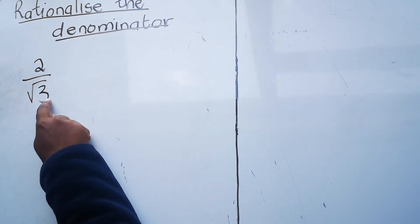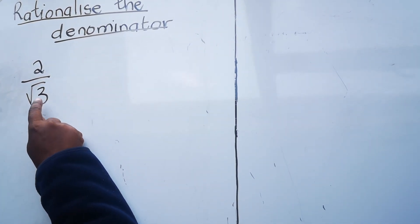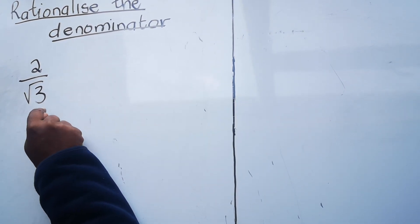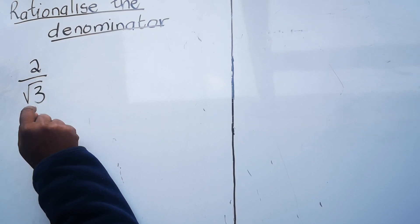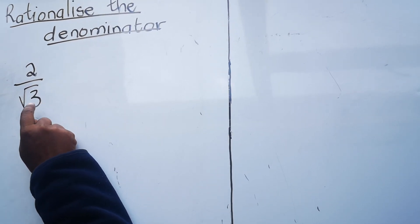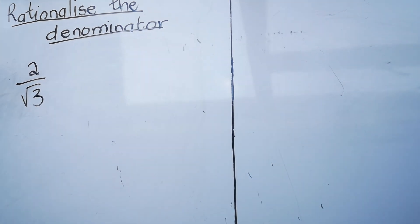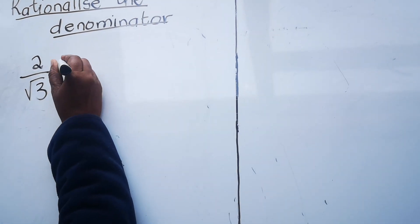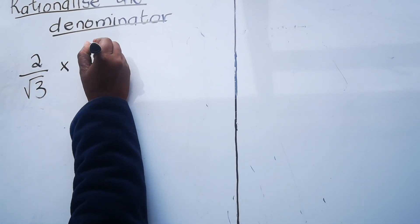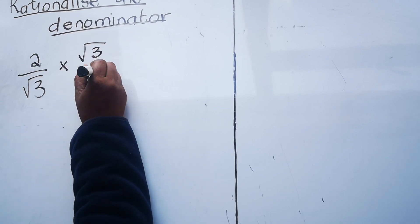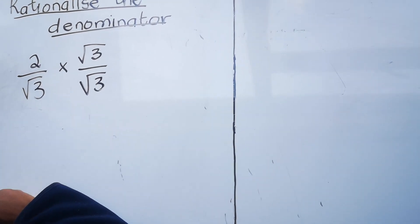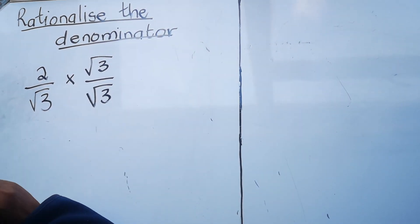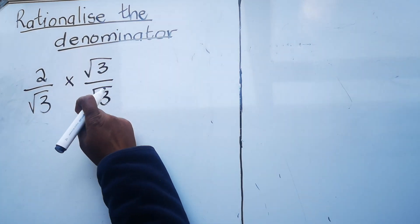We want our denominator to be a rational number — a number that can be written in the form a over b, where b is not equal to zero and a and b are integers. So how do you do that? When you have a one-term denominator that is not rational, you multiply by a 'fancy one'. We know that any number multiplied by one is itself, and any fraction where the numerator and denominator are the same equals one.